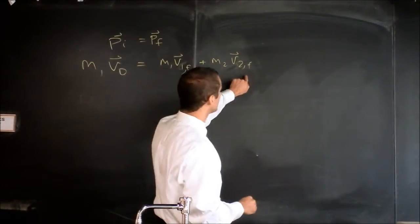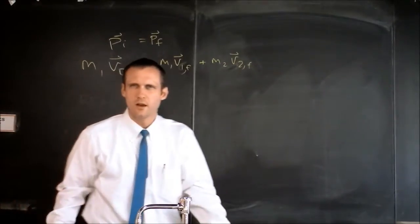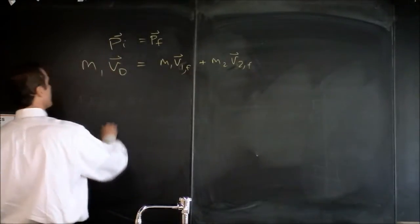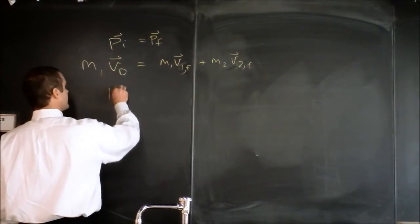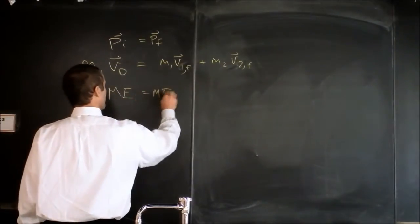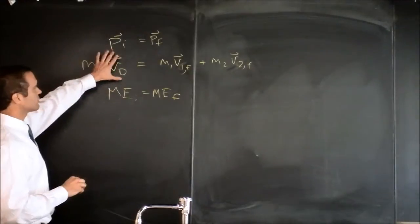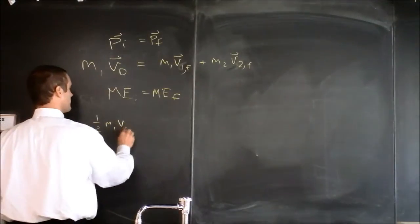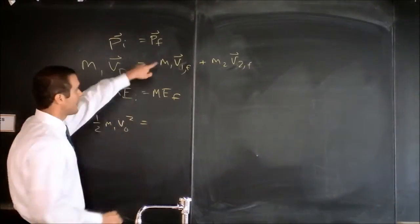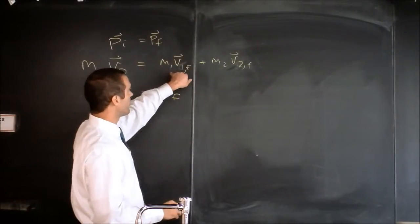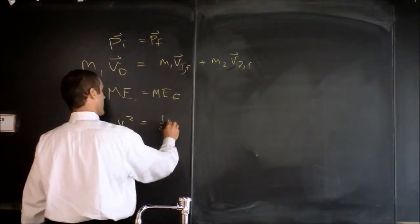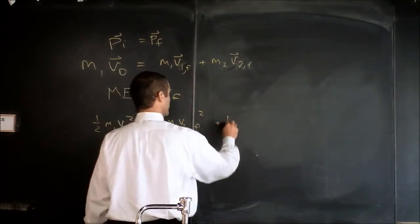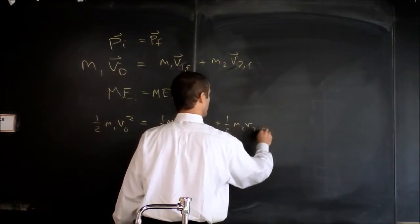So this is the conservation of momentum and the other thing that's true in only perfectly elastic collisions, the other thing that's true is that energy is conserved. So in that case, we can also say that KEi equals KEf. Let's identify the energy that we have initially. If one object is moving and the other object is still, we've got one-half mass one times V0 squared, that's the total energy initially. And the final energy is some energy from thing one, some energy from thing two. So let's write that out. One-half M1 times V1 final squared plus one-half M2 times V2 final squared.